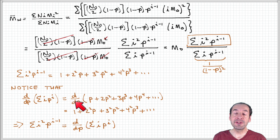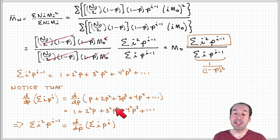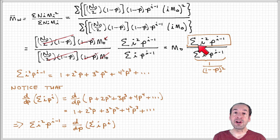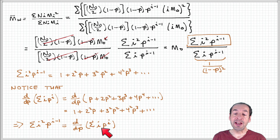If we take the derivative of that summation, the derivative of 2p² is 4p = 2²·p, then 3²p², then 4²p³, et cetera. Based on this analysis, we can convince ourselves that the summation of i²p^(i-1), which is in the numerator of our weight average molecular weight equation, is equivalent to the derivative of the summation of i·p^i.